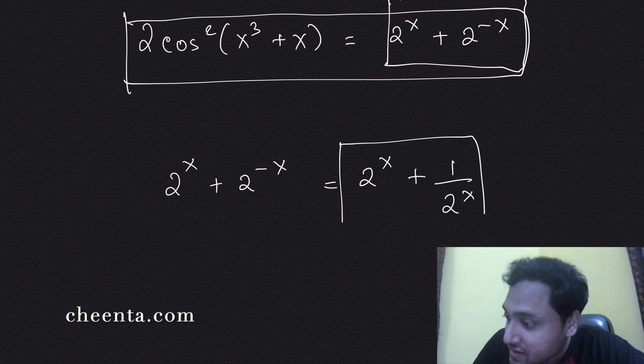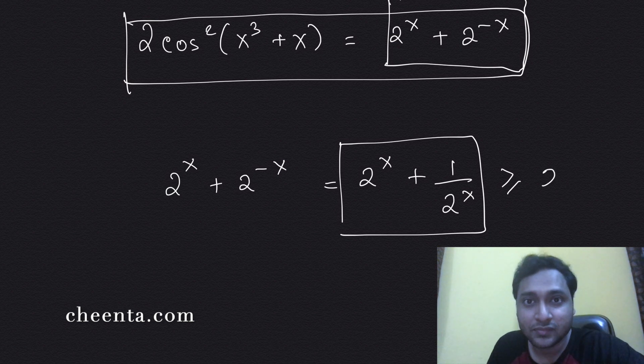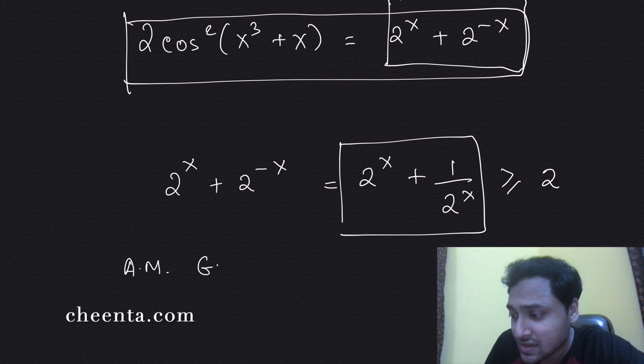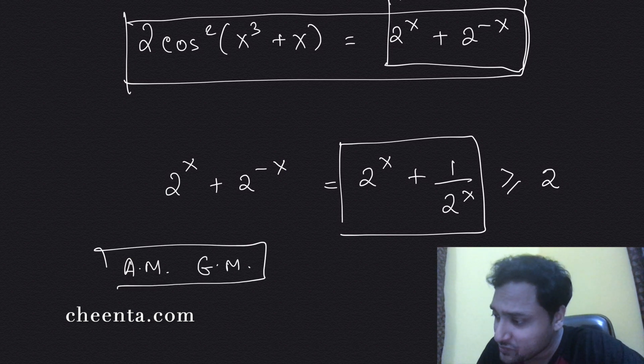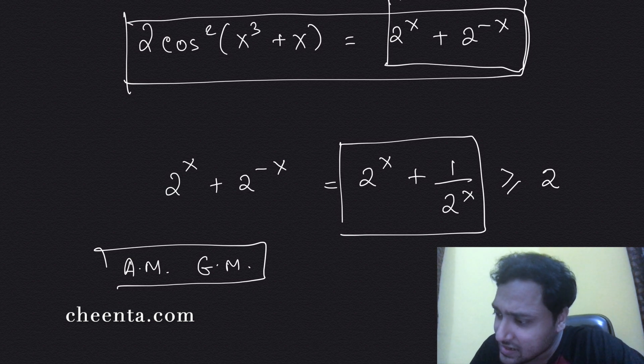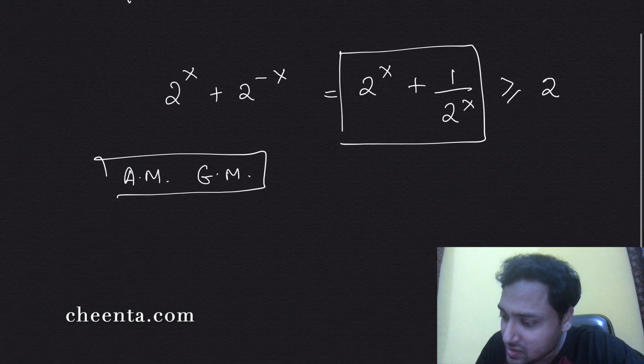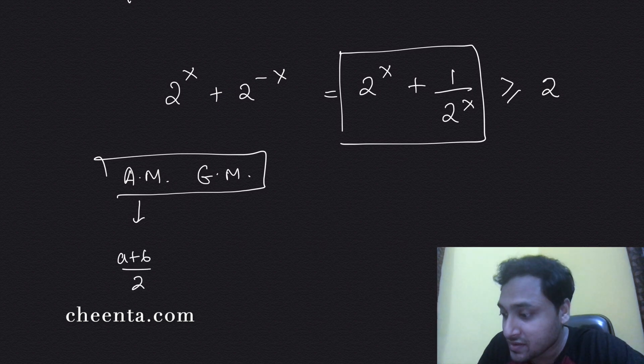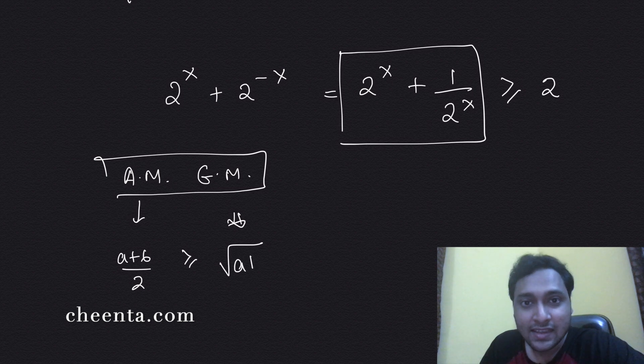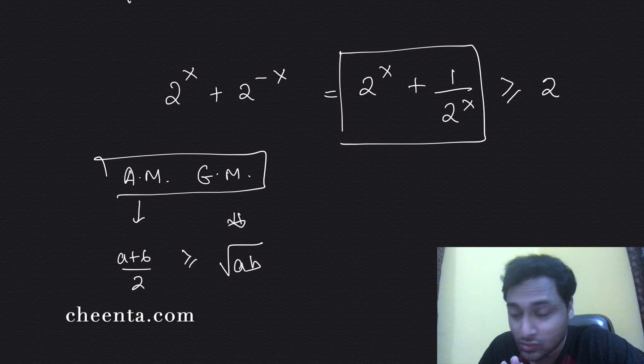This is always greater than or equals to 2. Why is that? You can use something called AMGM inequality. I talked about it in previous videos. The idea is that the arithmetic mean - the average of two numbers - is always greater than or equals to the geometric mean, which is square root of a times b, in the case of two positive elements a and b.